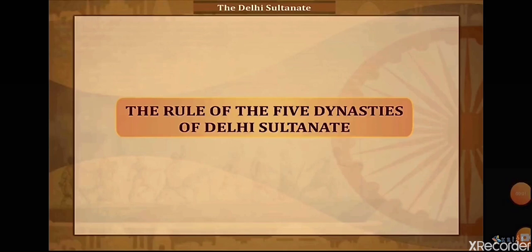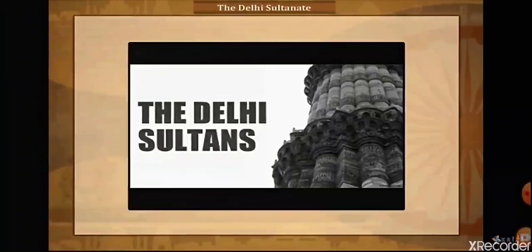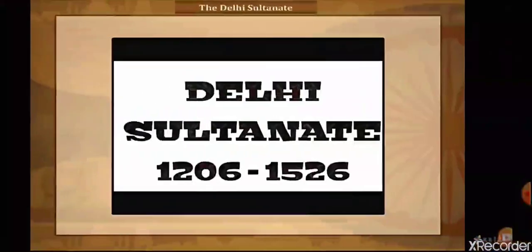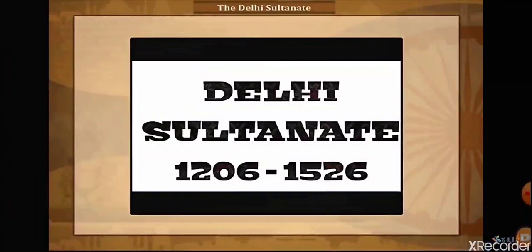The Delhi Sultanate is a term used to cover five short-lived dynasties — Delhi-based kingdoms or sultanates mostly of Turkish and Afghan origin. The sultanate ruled from Delhi between 1206 to 1526, when the last sultan, Ibrahim Lodi, was replaced by the Mughal ruler Babur in the First Battle of Panipat.